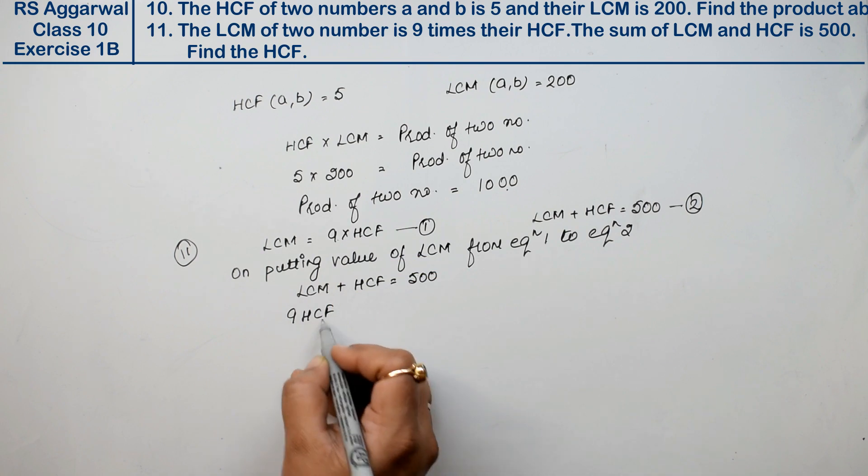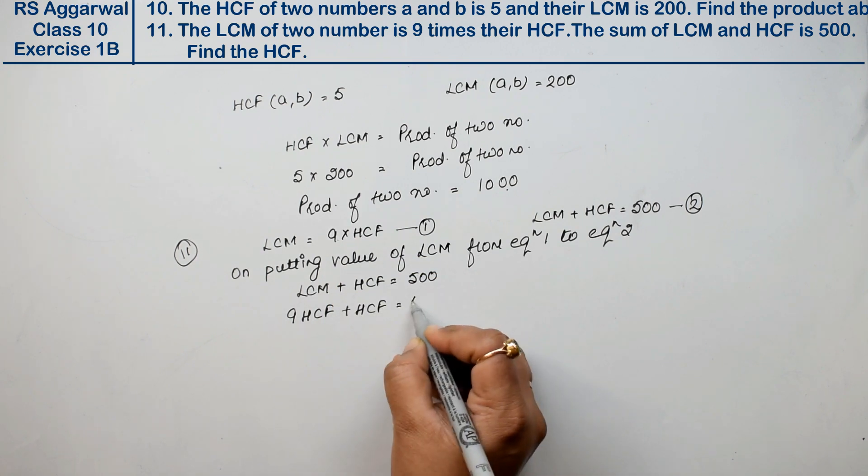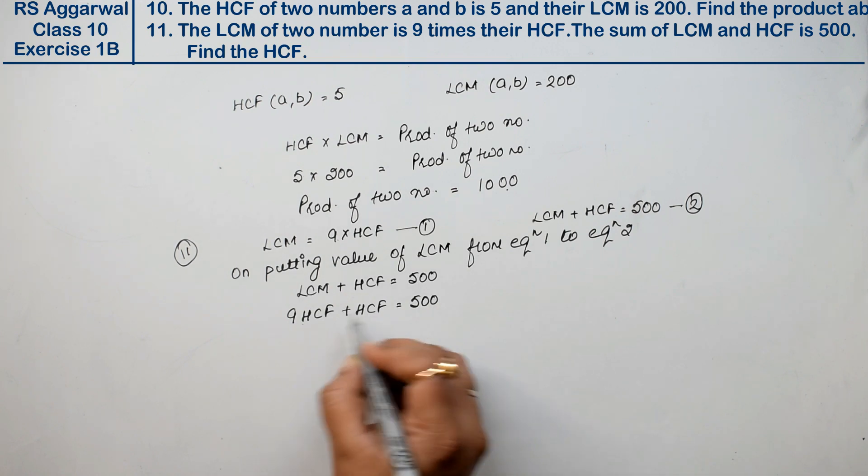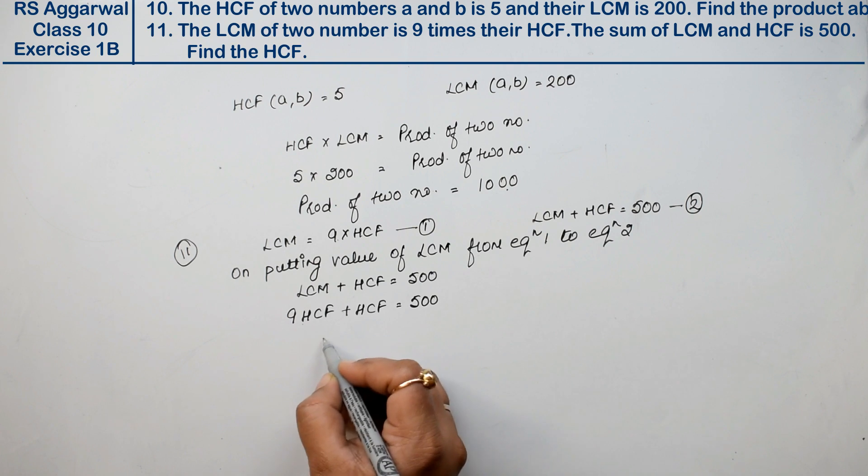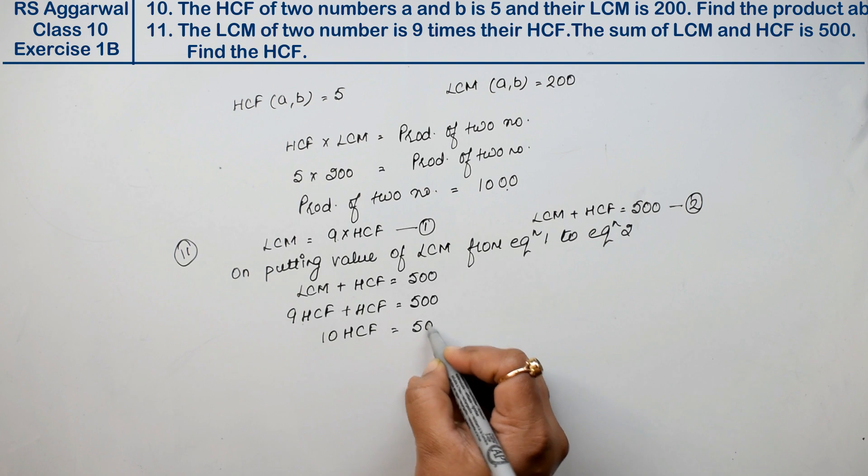Plus HCF equals to 500. Now this is 9 and this is nothing else, this means 1. So how much is it? 9 plus 1, 10 HCF is equal to 500.